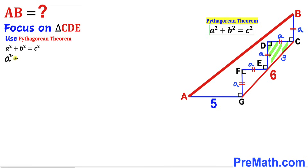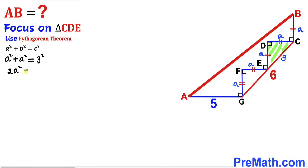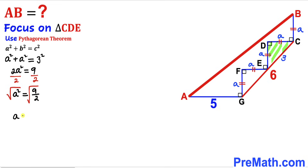So we get a² + a² = 3², which simplifies to 2a² = 9. Dividing both sides by 2 gives a² = 9/2. Taking the square root on both sides, lowercase a equals 3 divided by the square root of 2.